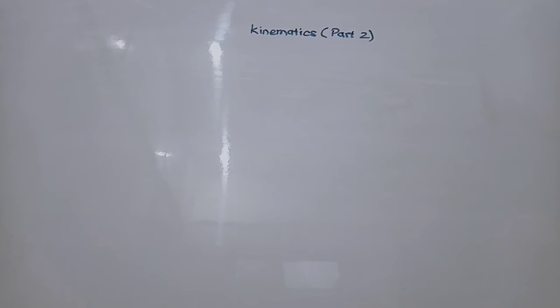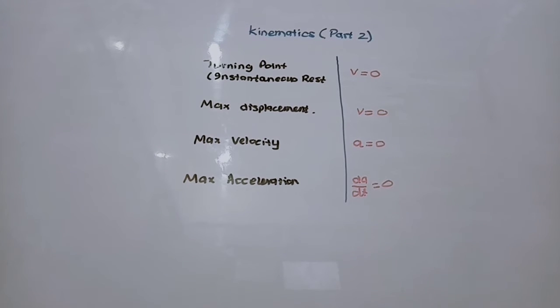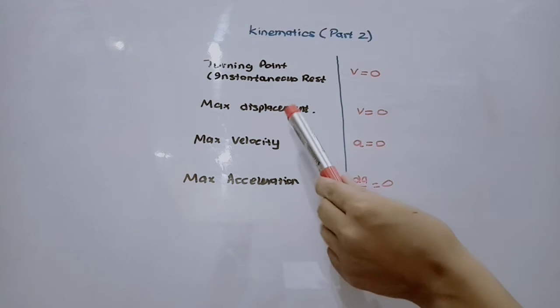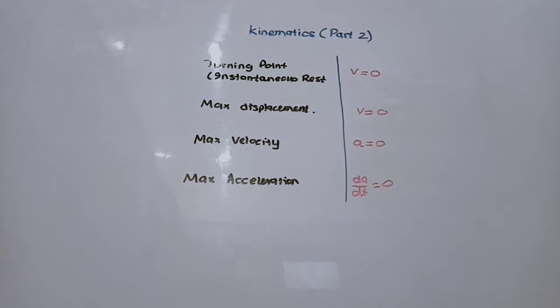Now let's discuss some important terminologies related to kinematics questions. Whenever a question says instantaneous rest or turning point, that implies velocity is 0. Whenever it says maximum displacement, it implies velocity is 0. Whenever it says maximum velocity, it means acceleration is 0. And whenever it says maximum acceleration, it means the rate of change of acceleration, dA/dt, is 0.